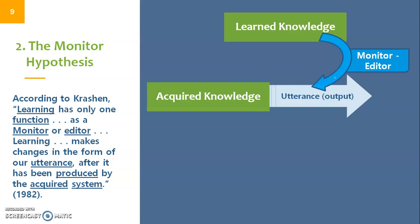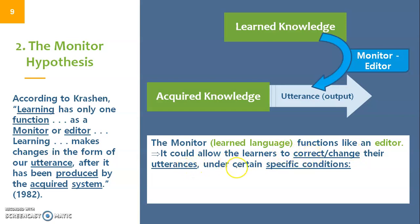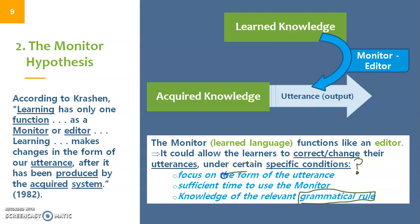The monitor functions as an editor and allows learners to correct or change their utterances under specific conditions. These conditions are: focus on form, having enough time to reflect on what was said or written, and knowing the grammatical rule. If a learner doesn't know the rule, they cannot correct themselves. Once all three conditions are met, the learned knowledge can be employed to edit the acquired knowledge and produce correct utterances.